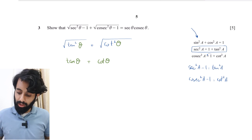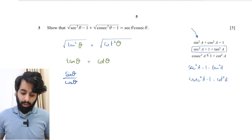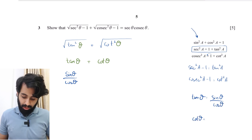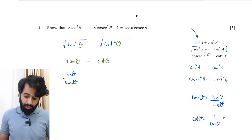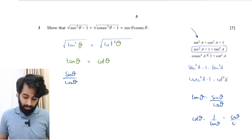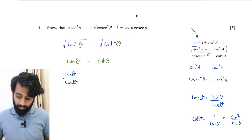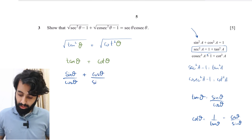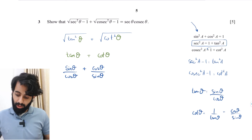Now I'll convert tan θ and cot θ into sine and cosine. tan θ = sin θ / cos θ, and cot θ = cos θ / sin θ, since cot θ is the reciprocal of tan θ. So our expression becomes sin θ / cos θ + cos θ / sin θ.